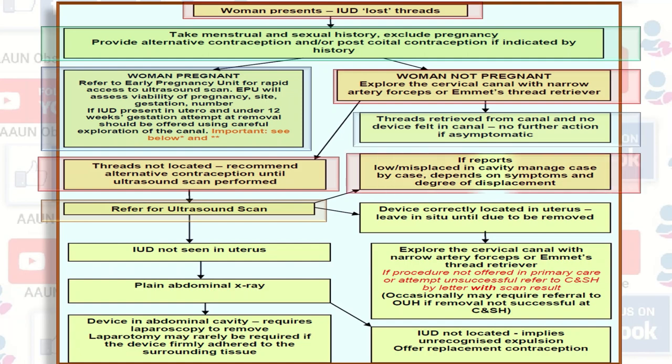If ultrasound scan reports a low or misplaced IUCD in the cavity, manage case by case depending on symptoms and degree of displacement. If device is correctly located in the uterus, leave in situ until due for removal, then explore the cervical canal with narrow artery forcep or Emmet thread retriever. If the procedure is not offered in primary care or the attempt is unsuccessful, refer to contraception and sexual health by letter with scan results. Occasionally the patient may require referral to a tertiary centre if removal is not successful.